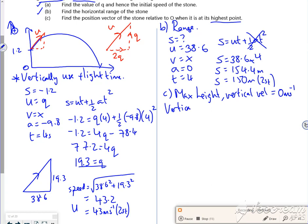S I want, U was 19.3, V is 0, A is minus 9.8, and T I'm not fussed about. So that's got to be V squared equals U squared plus 2AS, so 0 squared is 19.3 squared plus 2 times minus 9.8 lots of S.